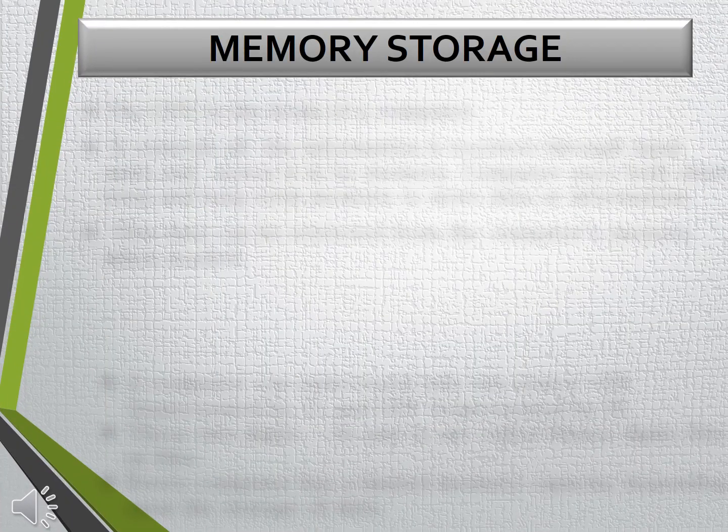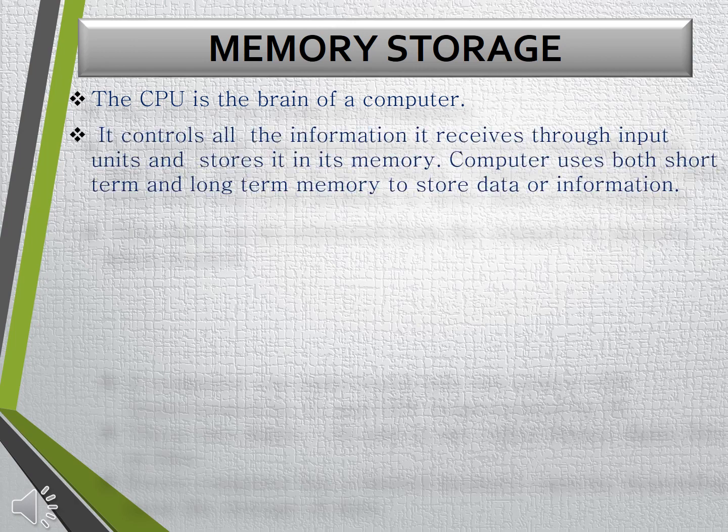Humans have the capability to think, though a computer cannot think of its own. Yet it has more storage capacity than a human brain. The CPU is known as the brain of the computer as it controls all the information it receives through the input unit and stores it in its memory.